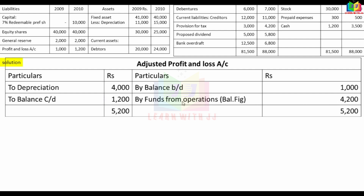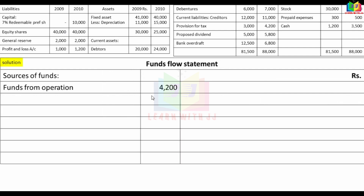In the fund flow statement, the funds from operations is 5,200. Regarding capital: 7% redeemable preference shares — there were no shares in 2009 but 10,000 shares in 2010, so 10,000 was issued. Equity shares had no changes.